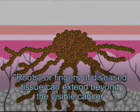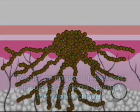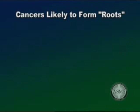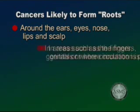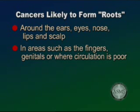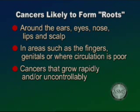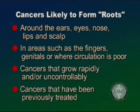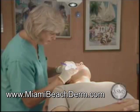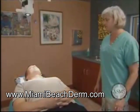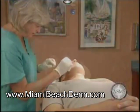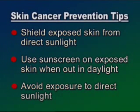Cancers frequently invade surrounding normal tissue, causing extensive destruction of skin and bodily structures. Many cancers may form roots or fingers of diseased tissue that extend beyond the boundaries of the visible cancer. Cancers most likely to form these complicated root systems are located in cosmetically sensitive or functionally critical areas — around the ears, eyes, nose, lips, and scalp — or in areas where excess tissue is minimal, such as the fingers and genitals, or where circulation is poor, or in cancers that grow rapidly or have been previously treated. Mohs micrographic surgery is the most precise method for skin cancer removal, with the highest cure rates, and is most commonly used to treat basal and squamous cell carcinomas.